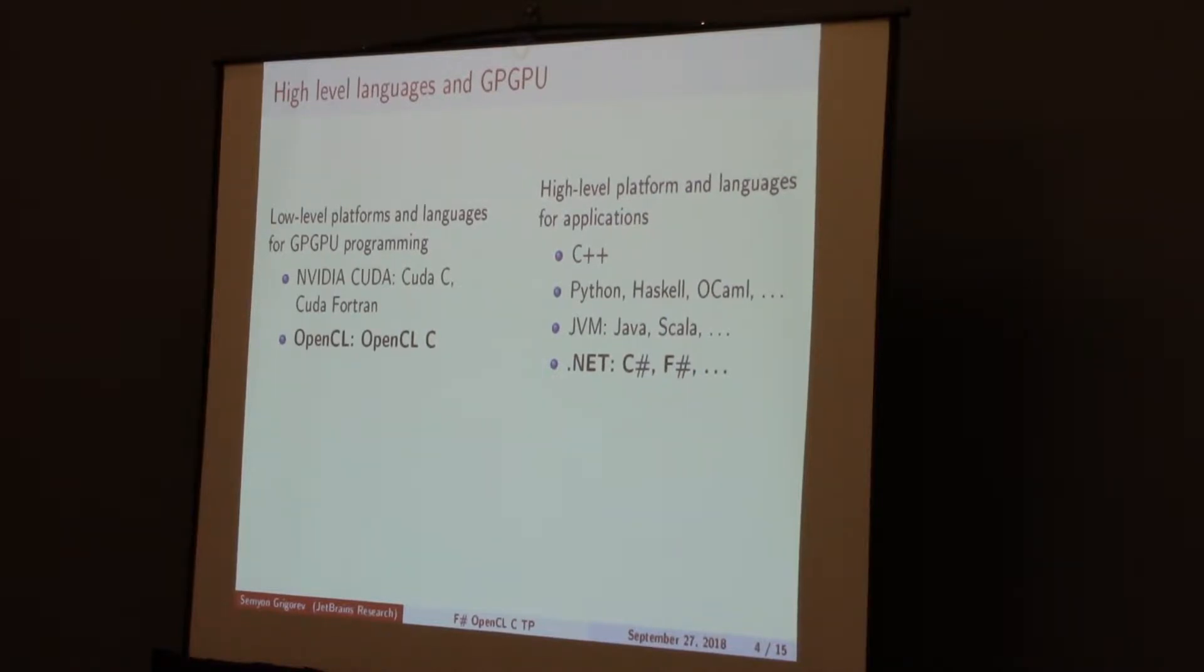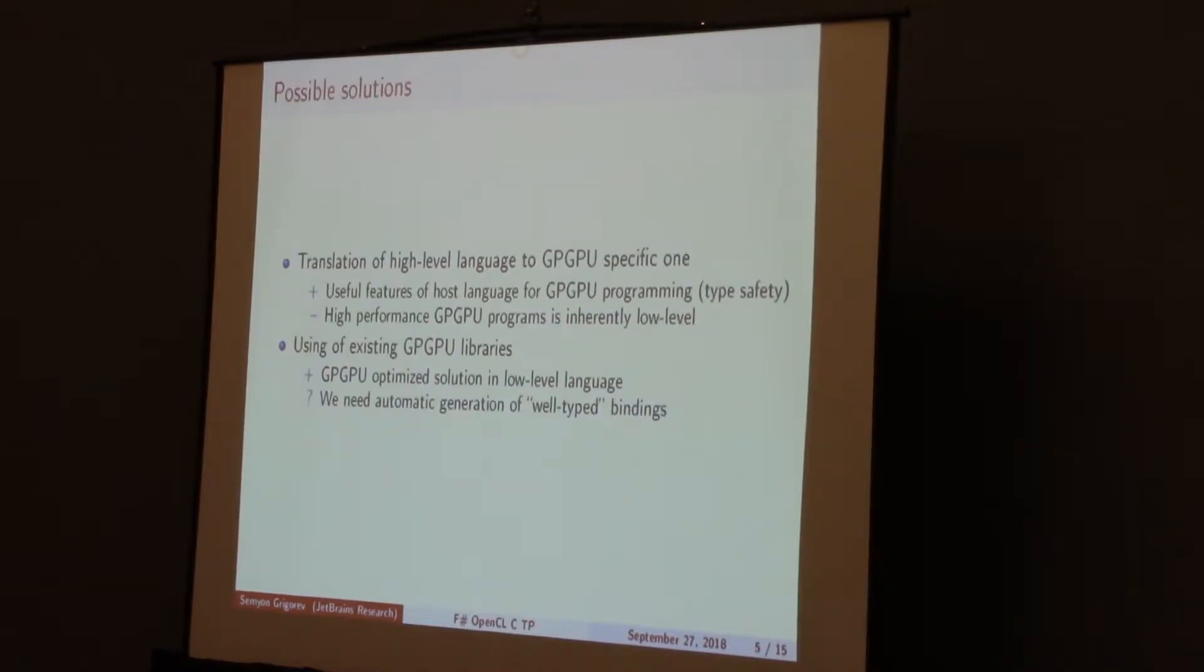The problem is that we still should use low-level languages for GPU programming. But when we think about applications, we want to use high-level platforms such as .NET or JVM. And of course, we want to use high-level languages for application development. The interaction between high-level platforms and low-level GPU code is a challenge.